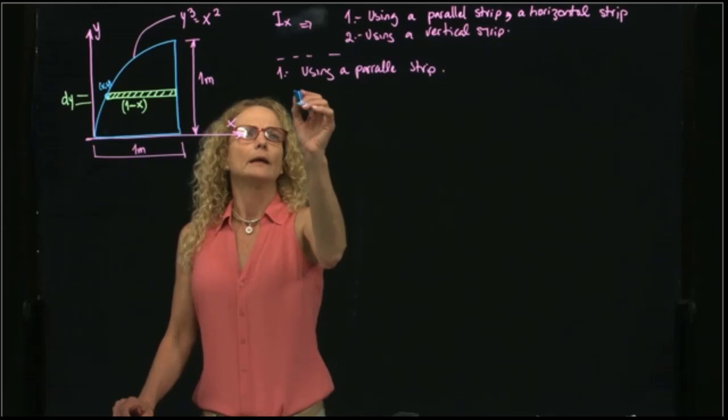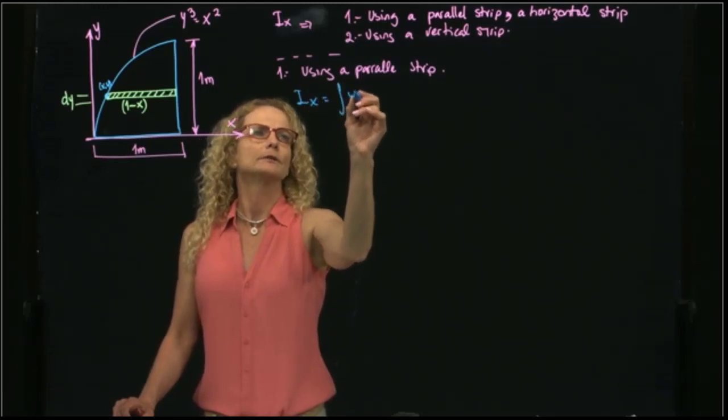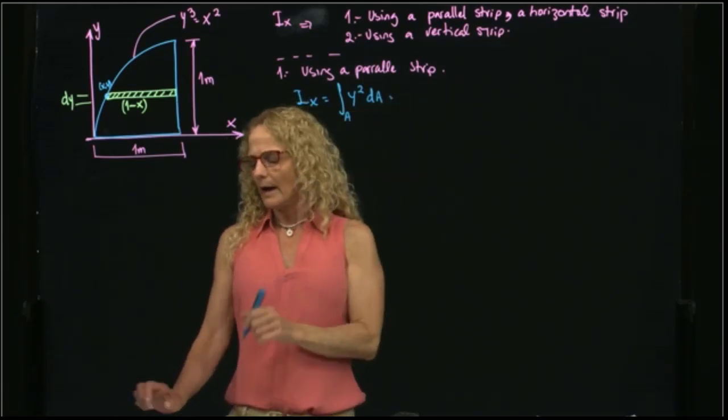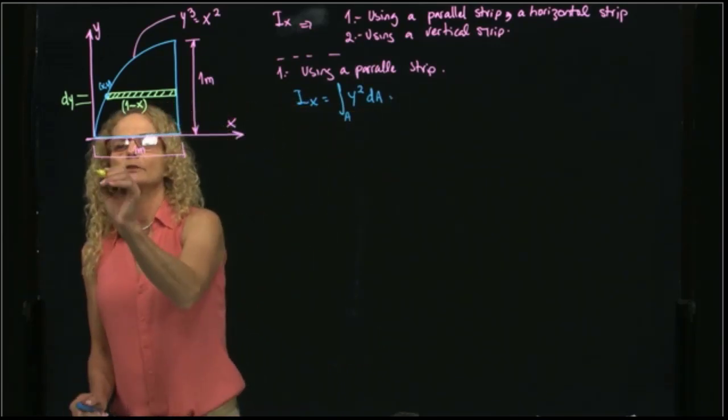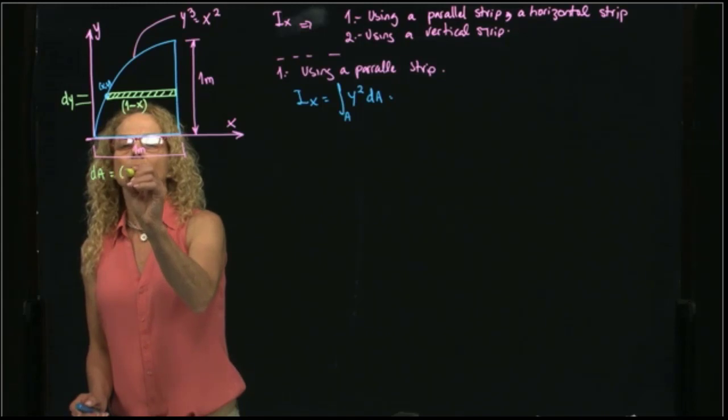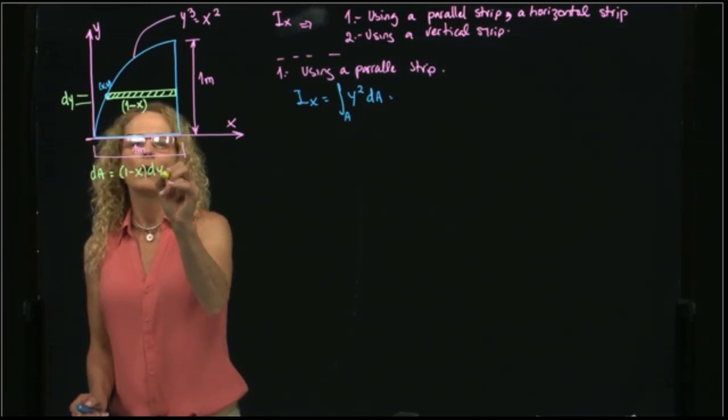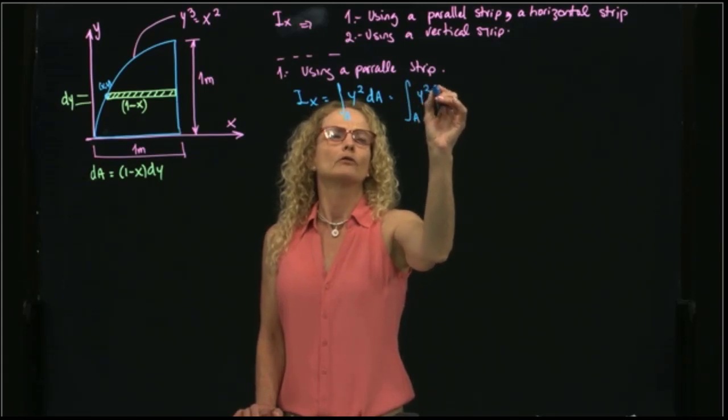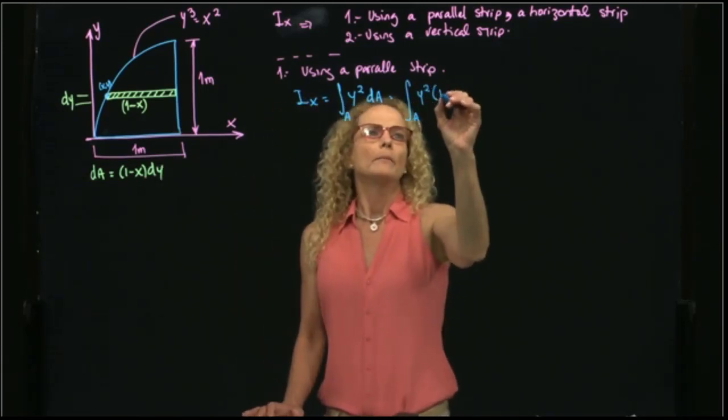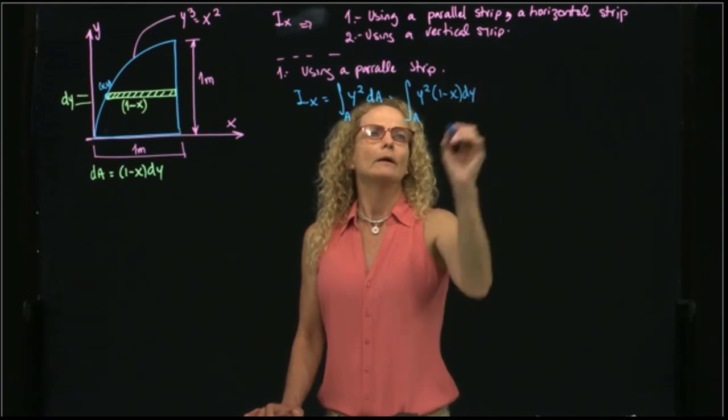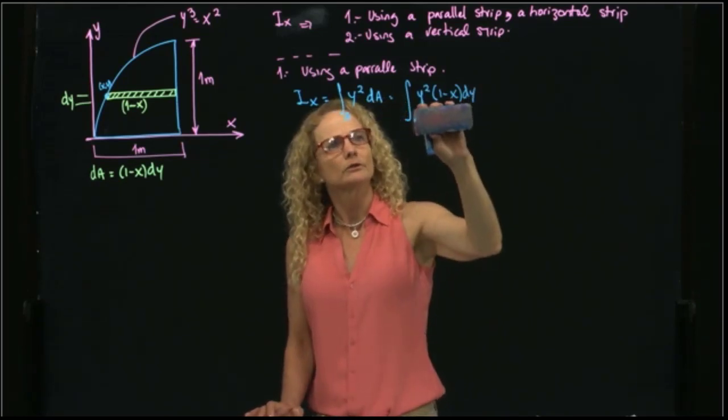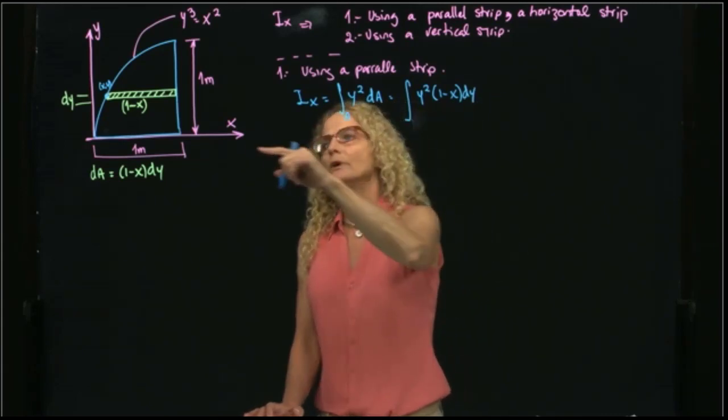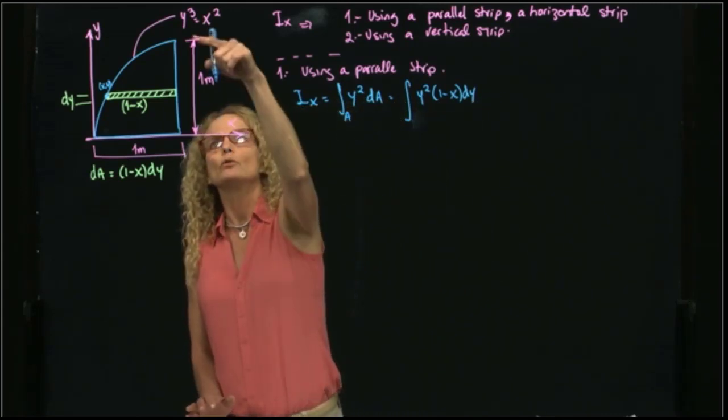I will calculate Ix, which you know is y squared dA, and this is the integral of the area. I set that my differential of area in this case is (1 minus x) dy. I will substitute that in my integral, and I have y squared (1 minus x) dy. And the limits of integration are no longer the area, are the limits of integration of my variable of integration, in this case is 0 to 1.